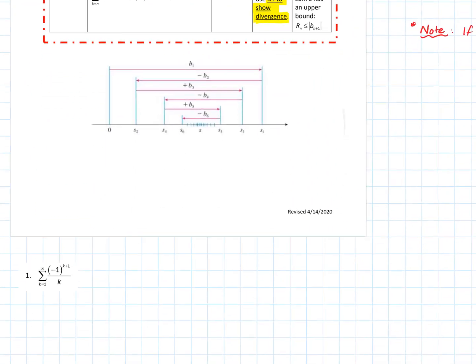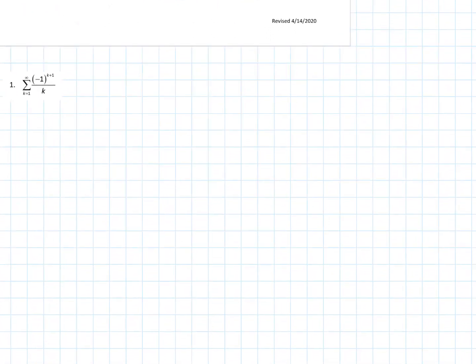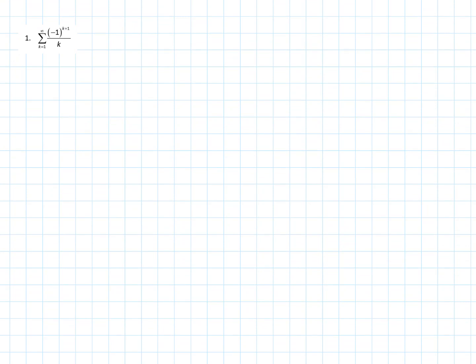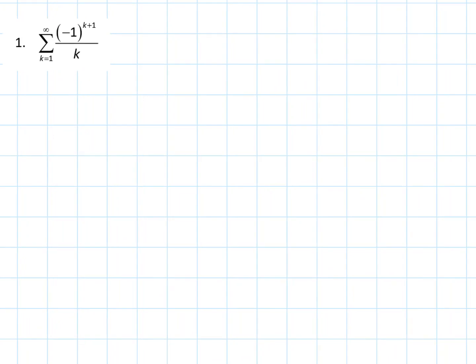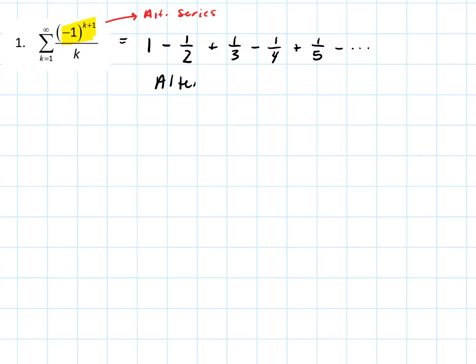Let's do two quick examples. The first: take the series negative one to the k plus one over k. This is clearly an alternating series. Written out it's one minus one half plus one third minus one fourth plus one fifth and so on — this is what we call the alternating harmonic series.